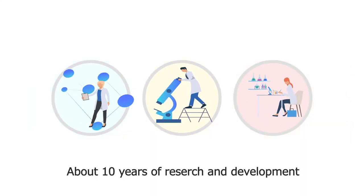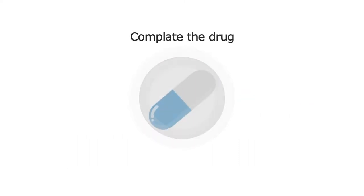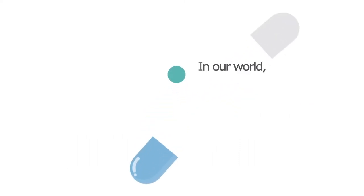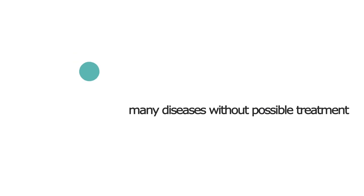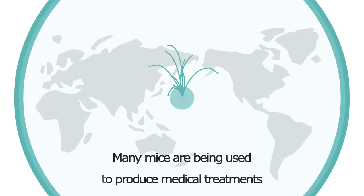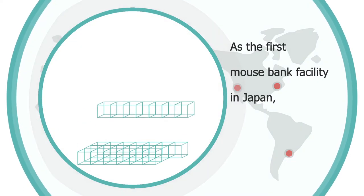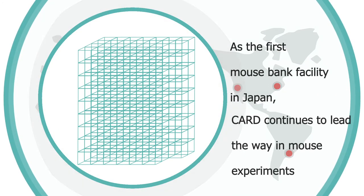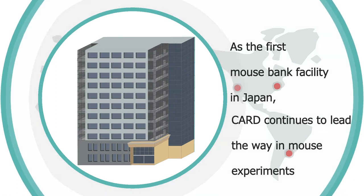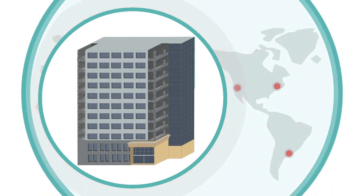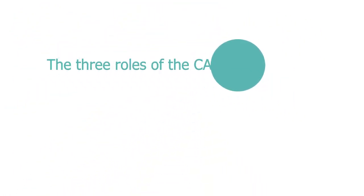After that, it generally takes about 10 years of research and development to complete a new drug. The world still has many diseases without possible treatment, and many mice are being used to produce medical treatments. As the first mouse bank facility in Japan, CARD has been leading the way in mouse experiments. The three roles of the CARD mouse bank...